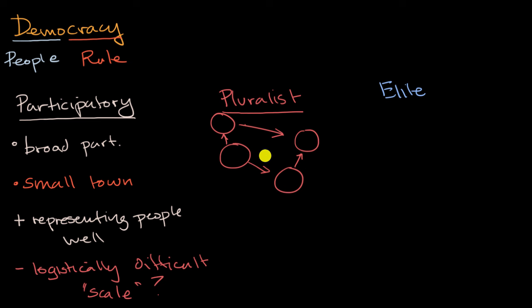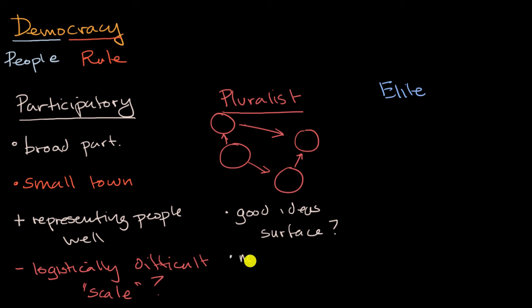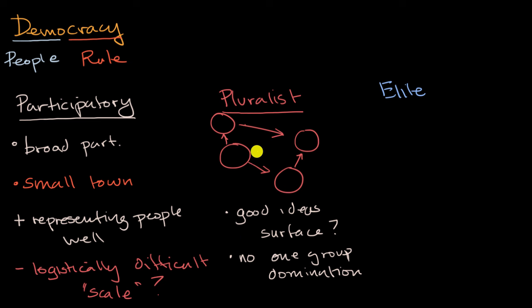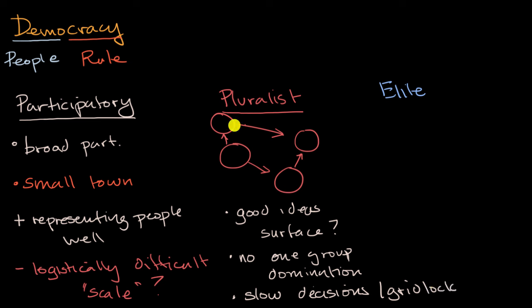What are the benefits of a pluralist democracy? Because of the vigorous debate, good ideas can surface, and there's no domination by just one group. But there are negatives too. All of this debate and argument can be very inefficient — slow decision making, or in the extreme, no decisions at all. Gridlock can occur because in order for anything to get done, you have to make too many people happy. Good ideas might actually die because it's very hard to make everyone happy.